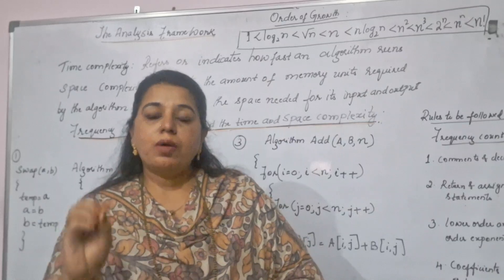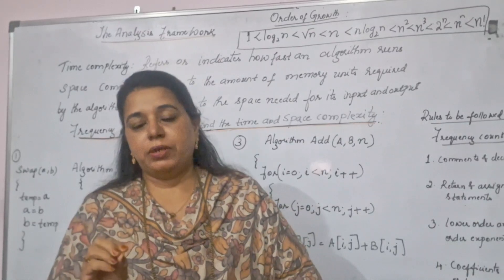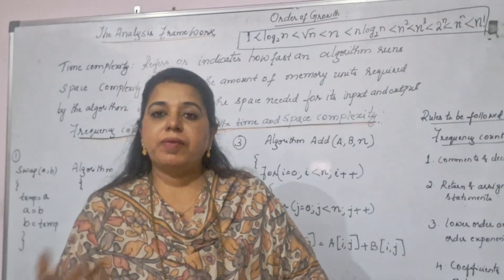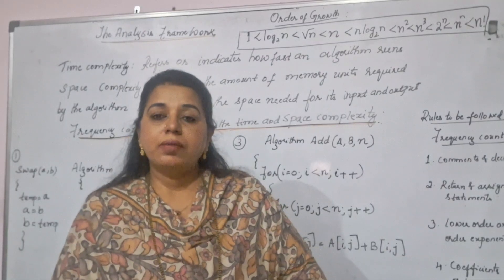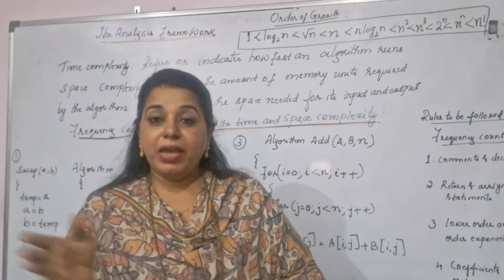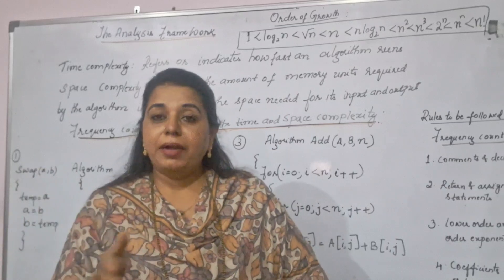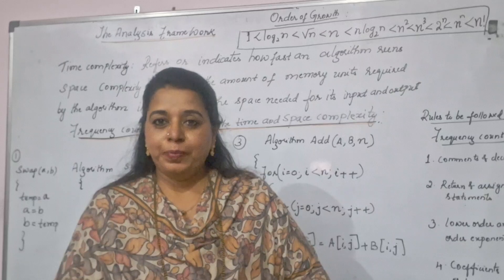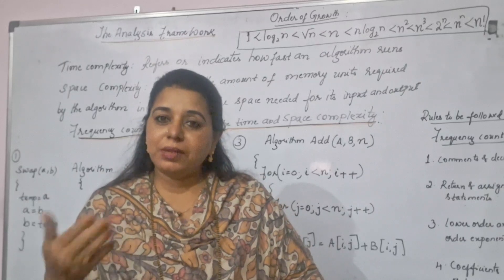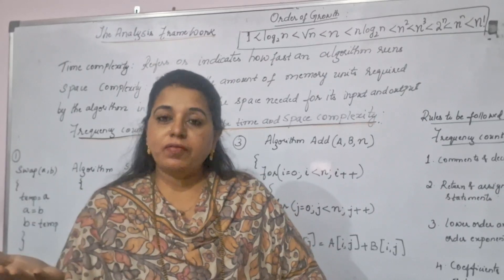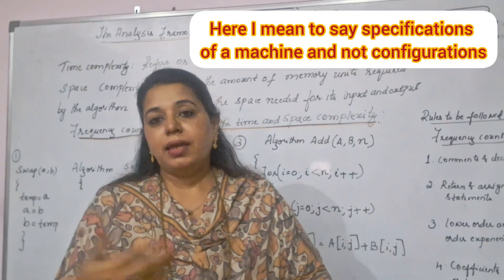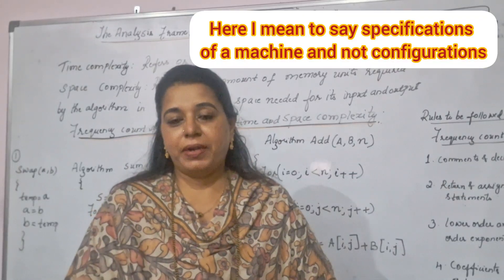So now here, since in our machines we have different configurations, we cannot use the time. We cannot use seconds or milliseconds as the unit of time. Because these factors are affecting the same steps, the same algorithm, the same logic. If it is giving you 5 milliseconds, for me it is 7 milliseconds. The difference is because the configurations in our machines are different.